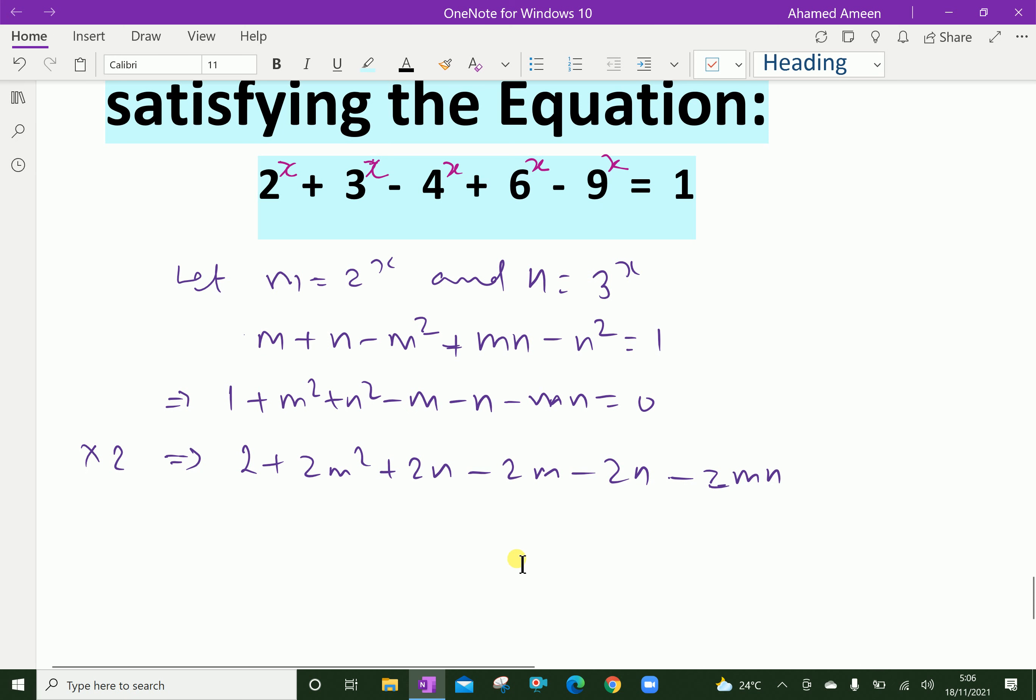This 2 can be written as 1 + 1. We can use completing the square, which gives (1 - m)^2 + (n - 1)^2 + (m - n)^2 = 0.